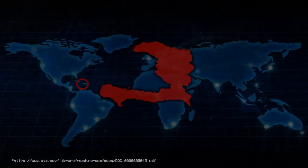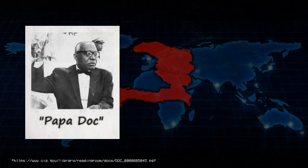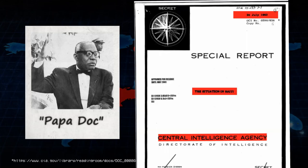1959. Haiti. The CIA helps Papa Doc Duvalier become dictator of Haiti. He creates his own private police force, the Tonton Macoutes, who terrorize the population with machetes. They will kill over 100,000 people during his reign. The US does not protest their human rights record.